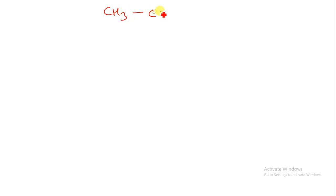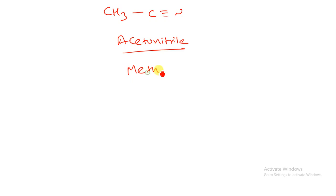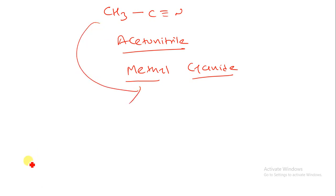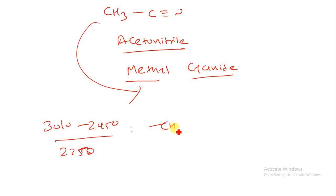In an examination, write down the whole structure CH3CN, and also write the name of that compound — acetonitrile or methyl cyanide. Remember the two key peaks: 3010–2950 cm⁻¹ for CH3 stretching and 2250 cm⁻¹ for C≡N. By solving these two peaks you can easily answer this question.